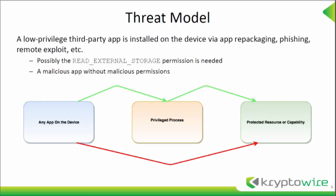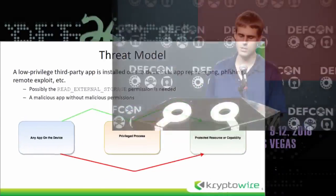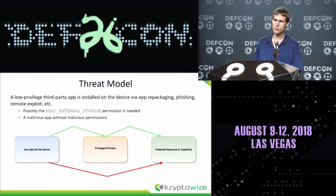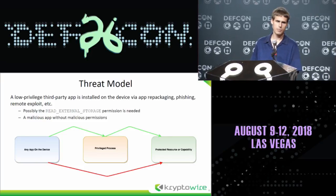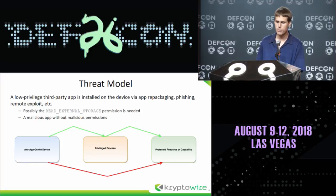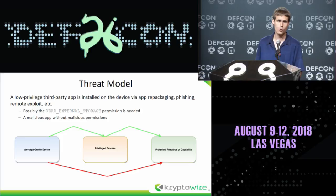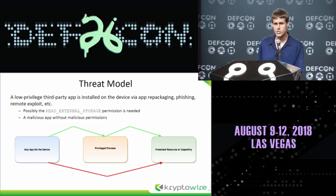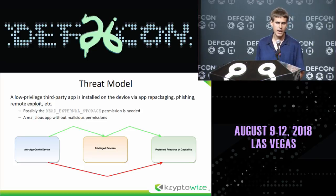Here's the threat model. A low-privilege third-party app needs to be present on the device and this can reach the device either by repackaging or taking an application, inserting code into it, putting it onto a third-party market, phishing, sending it directly to the target, or remote exploit. We saw with the ADUPS command-and-control channel that it was over HTTP and using that you could man-in-the-middle it and say download this application, install it and run it. Generally the permission requirements are potentially no permissions or read external storage, because pre-installed applications sometimes dump data to the SD card. So the malicious app is leveraging a pre-installed app's open interface to get resources or capabilities it cannot access directly.